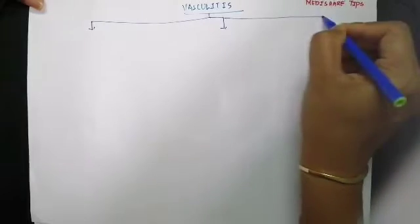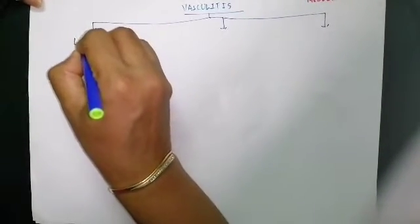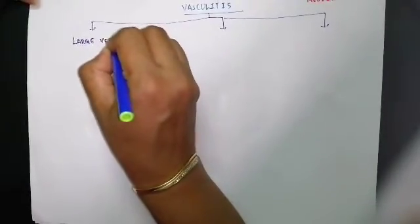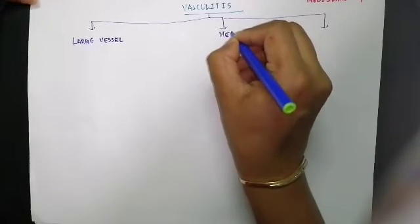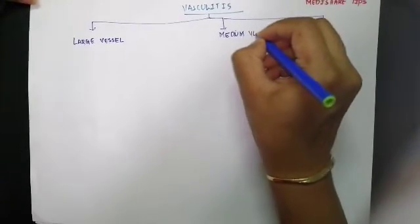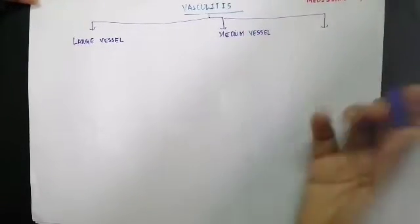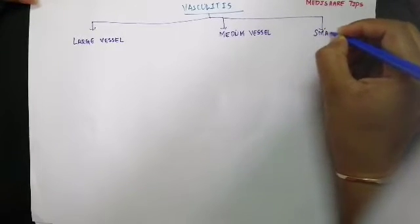Based on the type of blood vessel affected, vasculitis is divided into three types: large vessel vasculitis, which affects large-sized blood vessels; medium vessel vasculitis, which affects medium-sized blood vessels; and small vessel vasculitis.